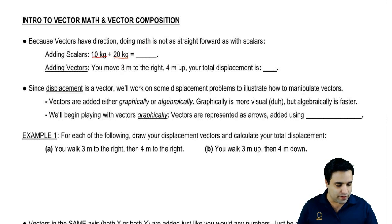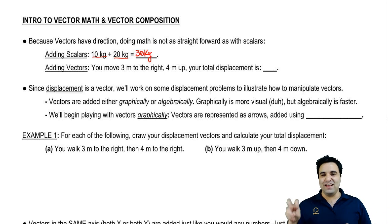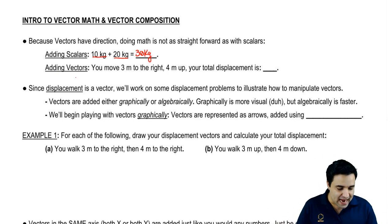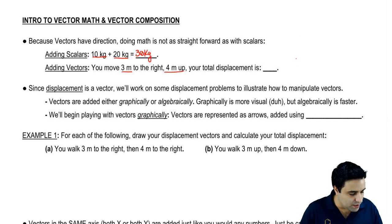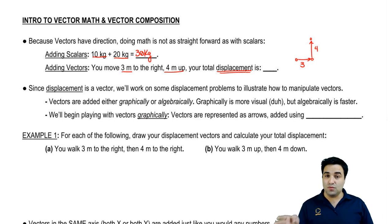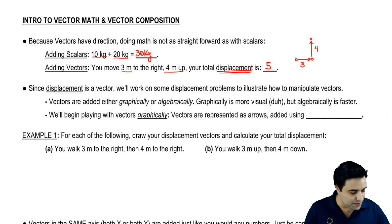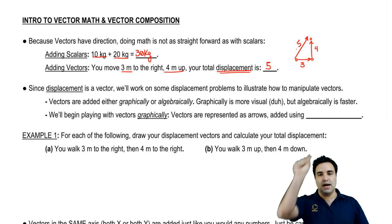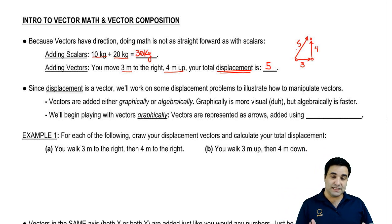Because vectors have direction, doing math with them is not as straightforward as scalars. For example, if you're adding two scalars, 10 kilograms plus 20 kilograms, that's just 30 kilograms. When you learned in first grade that one plus one is two, that was scalar addition. But to add vectors, it's a little bit different. If you move 3 to the right and 4 up, your displacement is not 3 plus 4, seven, but it's actually 5 because you're supposed to use the Pythagorean theorem. Displacement is the shortest line from beginning to end.